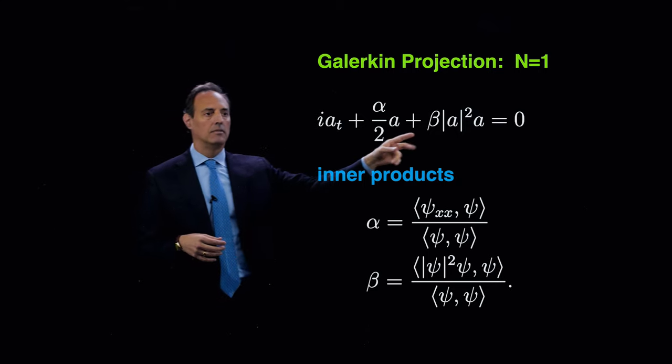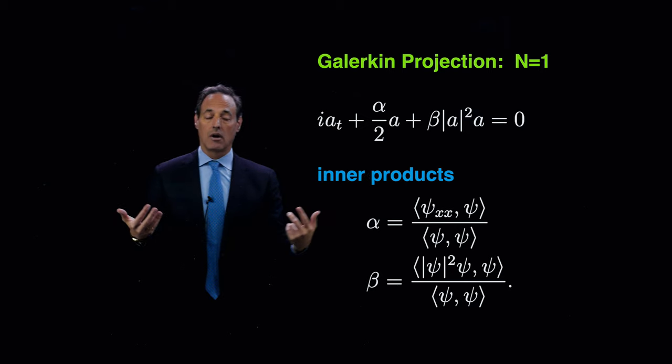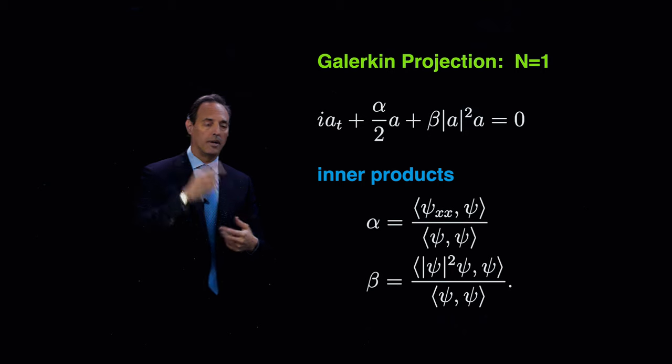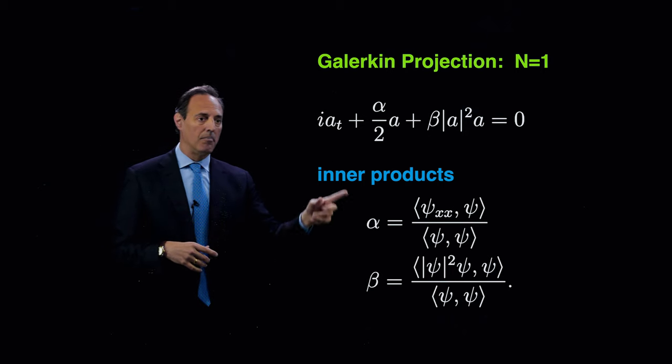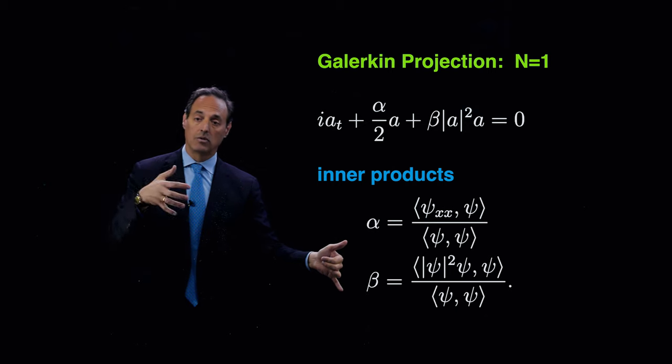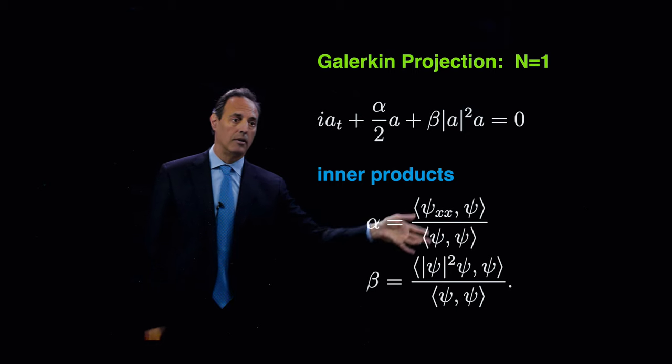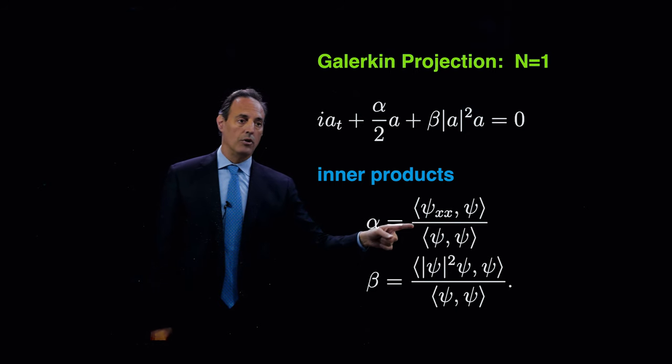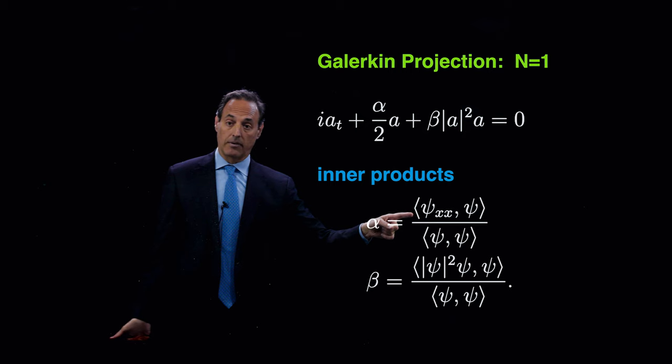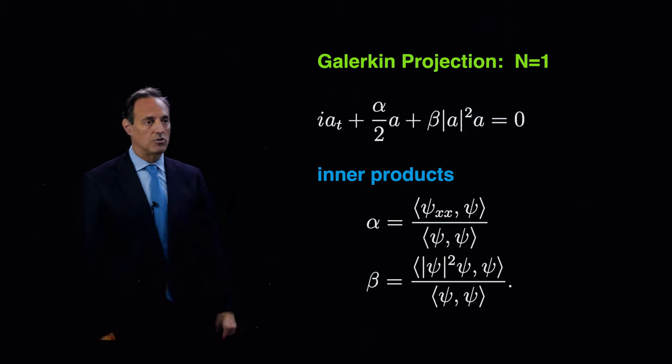i da/dt, alpha over 2 a, beta, mod a squared a. So notice it's a differential equation, not a partial differential equation, for one variable, A. And that coefficients, alpha and beta, determined from the inner product that you do once you've actually expanded your solution. And so here they are. Now notice that I'm taking inner product with respect to the second derivative of phi. I'm taking inner product with respect to the nonlinear contribution, the mod squared phi phi. So these are these two coefficients that you have here.